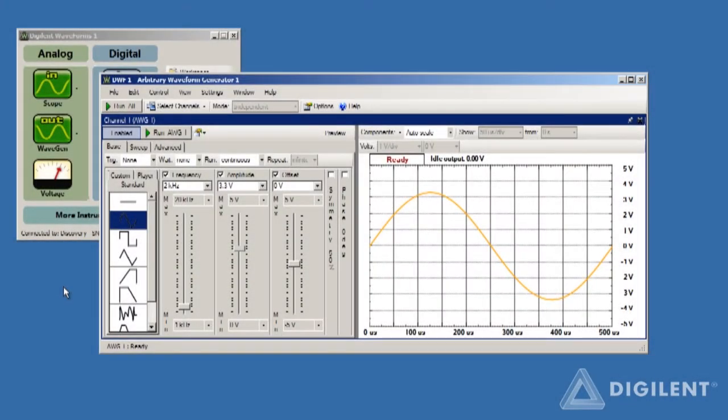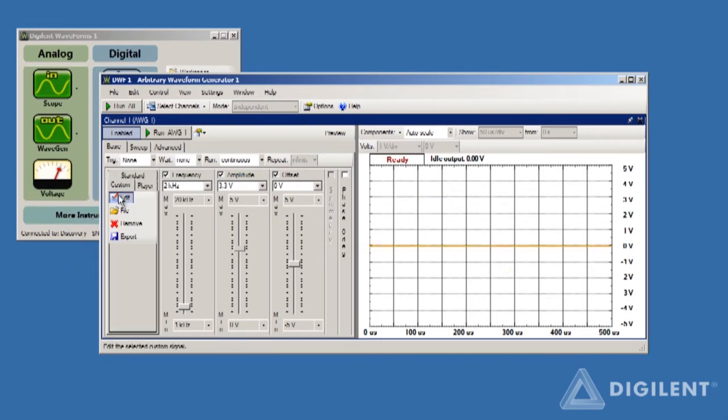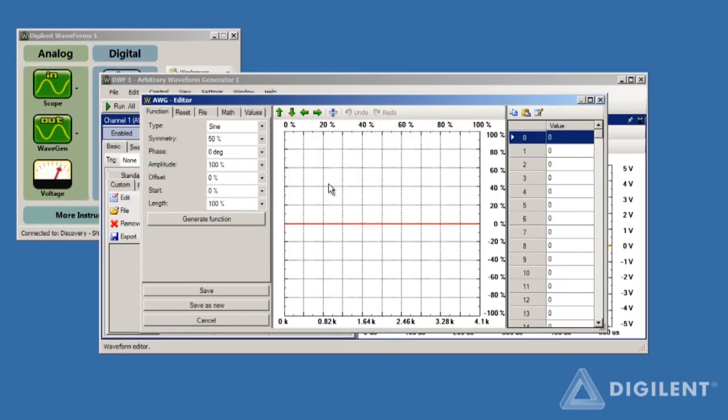To create a custom signal with the waveform generator, click on the basic tab, and then select custom. To create a signal, click on Edit. An Editor window will open.